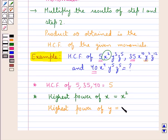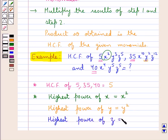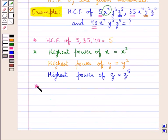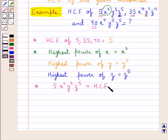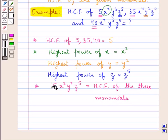y² is common to all three monomials. Similarly, we find the common power of z. Multiplying the results of step 1 and step 2, we get the HCF of the given monomials.